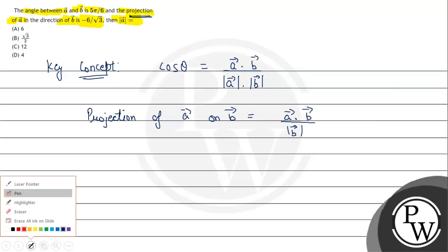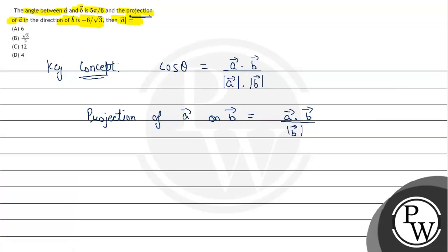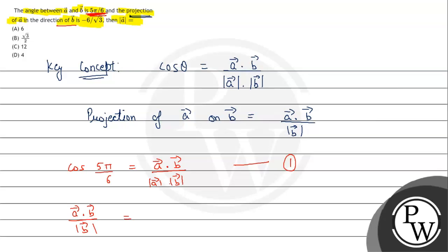Now, is key concept ko use karke equation ko solve karenghe. Statement me given hai angle between A and B is 5π/6. So cos of 5π/6 equals A dot B vector upon magnitude of A into magnitude of B — let us call this equation number 1. Projection given hai A on B, which equals A dot B upon magnitude of B vector, which is equal to minus 6 upon square root of 3.